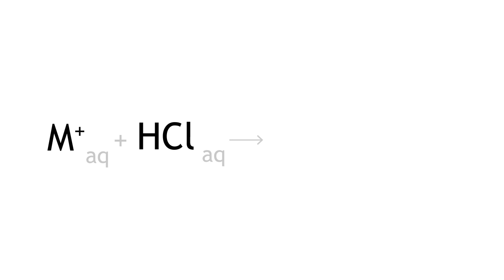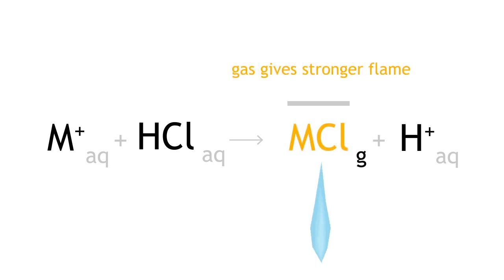Concentrated hydrochloric acid is used because the resulting metal chloride formed is more easily vaporized, hence making the flame test easier to conduct.